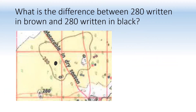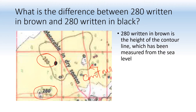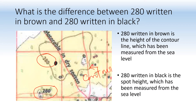What is the difference between 280 written in brown and 280 written in black? Since it is brown, the first is a contour line — so 280 written in brown is the height of the contour line measured from sea level. But 280 written in black is the spot height, also measured from sea level.